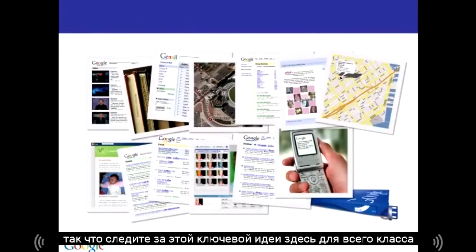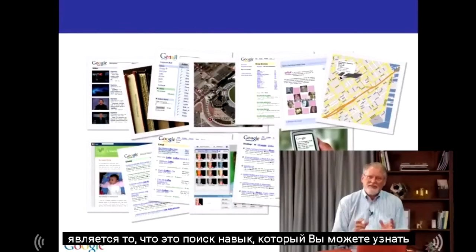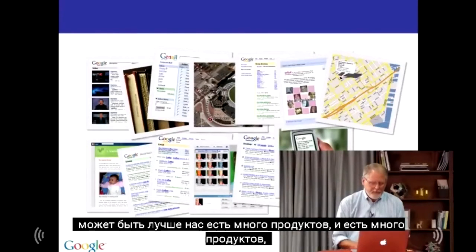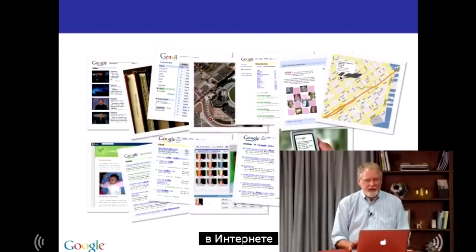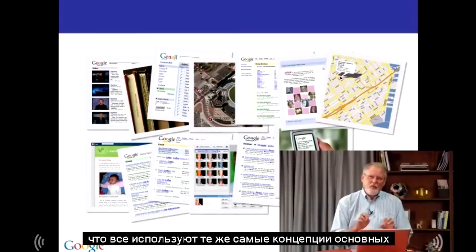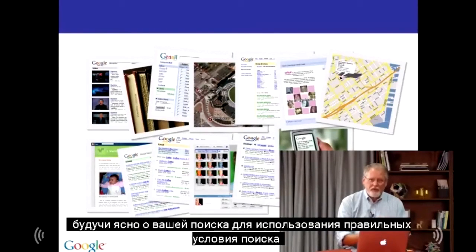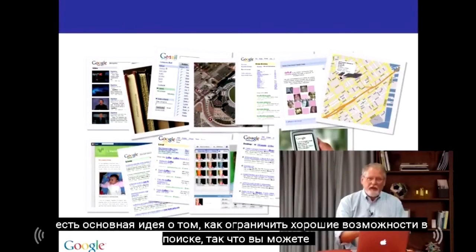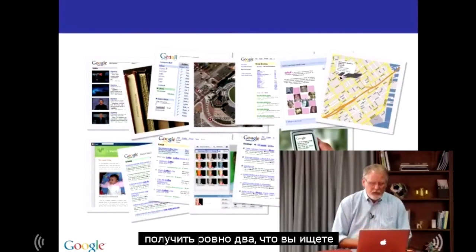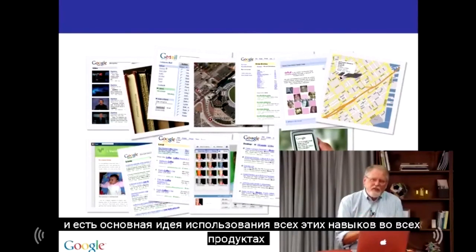The key idea for the entire class is that search is a skill you can learn and get better at. There are a lot of products on the internet that all use these same core concepts of search. There's the basic idea of being articulate and clear about what you're searching for using the right search terms, and the idea of how to limit the scope of your search so you can get exactly to the thing you're looking for.